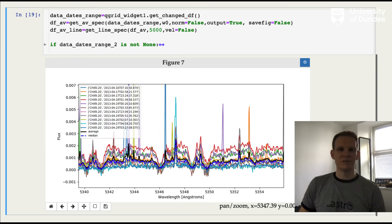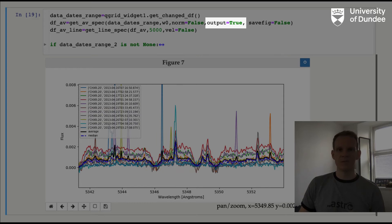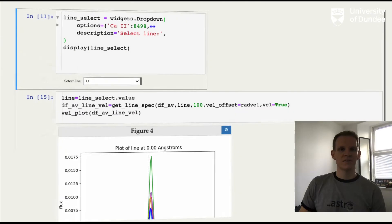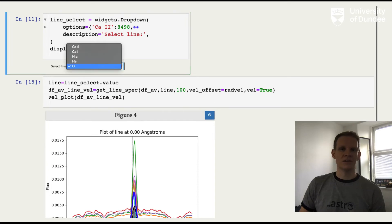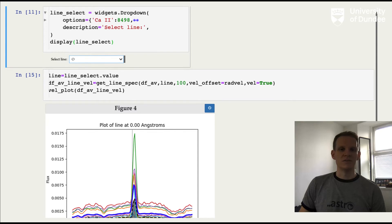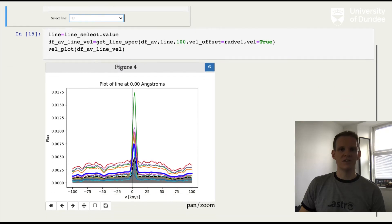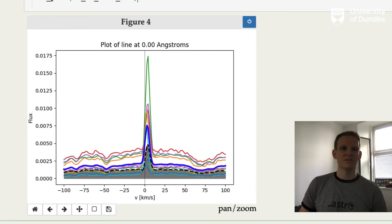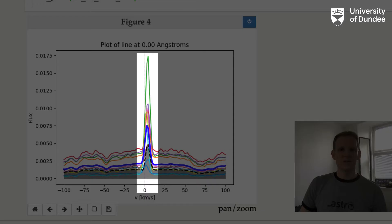Most of the StarMelt functions have the option to display plots or outputs of what the function actually does, as you see here. Further convenient functions include plotting velocity distributions around a given line. You can specify what that velocity range is, and this accounts for the radial velocity of the star, which is calculated by the package but isn't shown here. For this oxygen line, for example, you can actually see the velocity variations across the observations from the peaks of these lines.